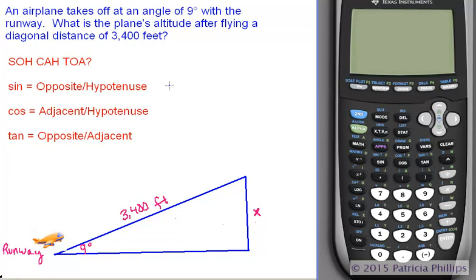Our scenario says that an airplane takes off at an angle of 9 degrees with the runway. What is the plane's altitude after flying a diagonal distance of 3,400 feet? When you start drawing your diagram, you can start by drawing the ground first. Then you know that on one side you're going to have an altitude, so you can draw a line perpendicular to the ground, and then you can draw the hypotenuse last.